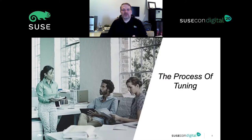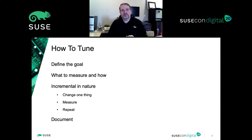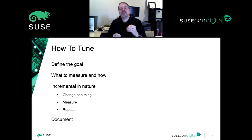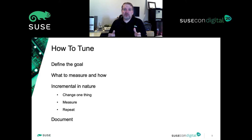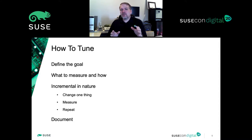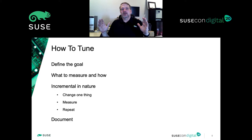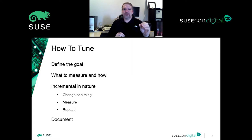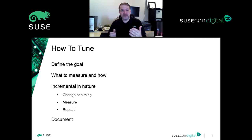Let's talk about the tuning process, because it's important to do it the right way. The first thing you have to do is define the goal — am I trying to get better throughput, lower latency, or service thousands of clients simultaneously with very low latencies? Also, look at that individual goal within the scope of the entire system, because tuning one aspect may have a detrimental effect on others.